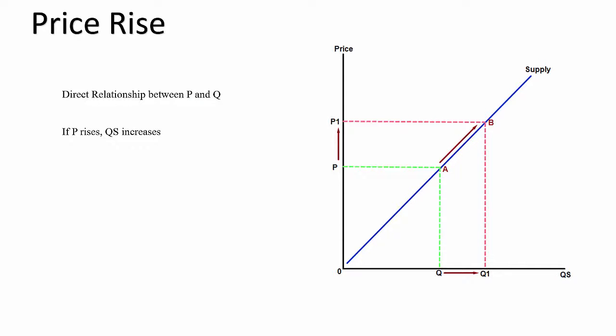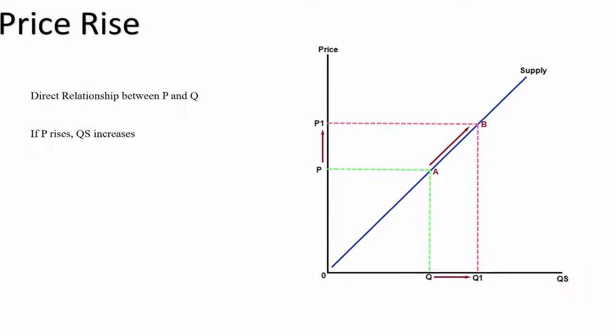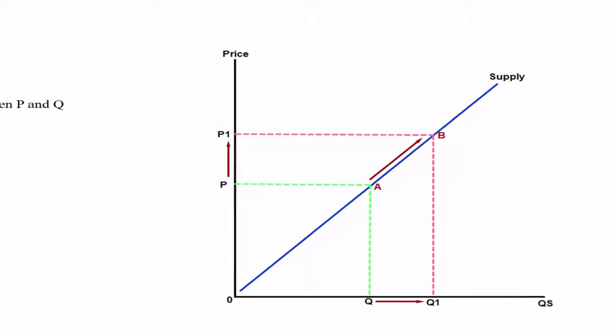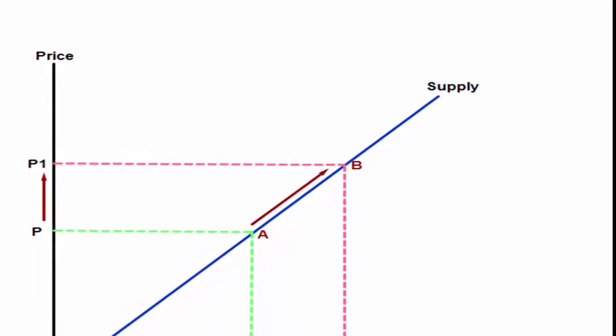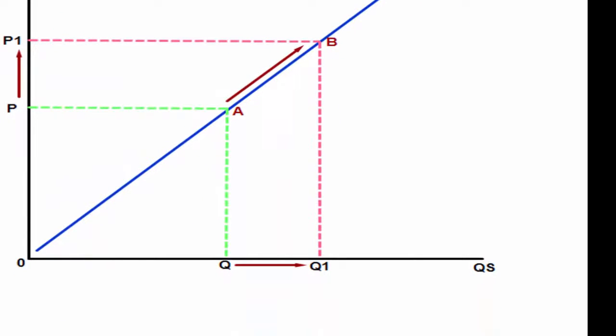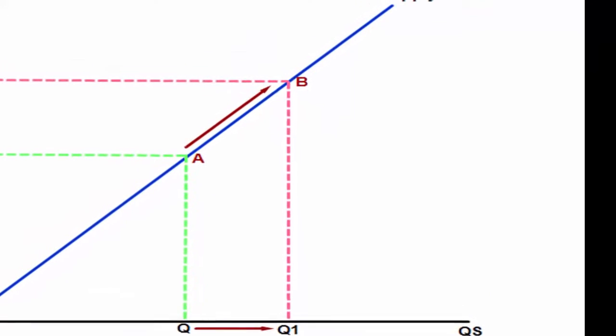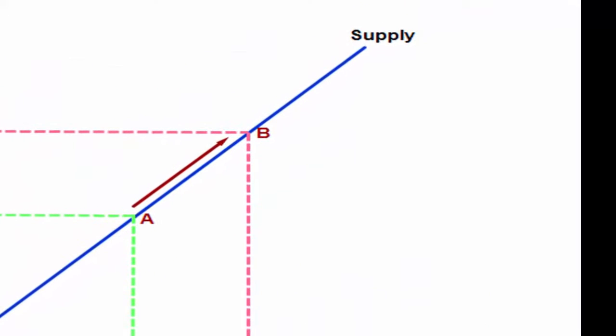Let's analyze what happens when there's a price rise. If the price rose from P to P1, then the quantity supplied of the good will increase from Q to Q1. You can see on the graph that if the price rises you get an increase in quantity and we move up the supply curve from point A to point B.